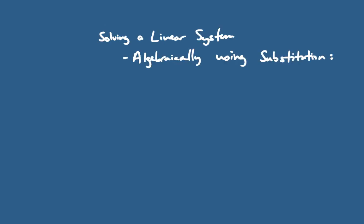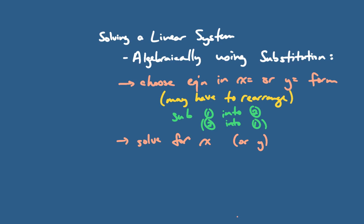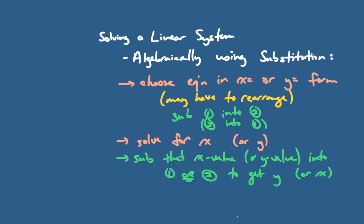To summarize: you can solve a linear system algebraically using substitution. First, choose the equation that is already in x-equals or y-equals form — you may need to rearrange. Then substitute one equation into the other to get a single-variable equation and solve for x or y. Substitute that value back into either equation to find the other coordinate. Finally, you may be required to check your solution by substituting into both functions and verifying that the left side equals the right side in both.